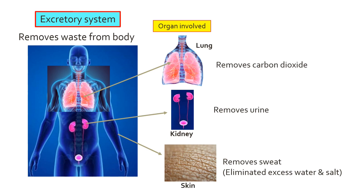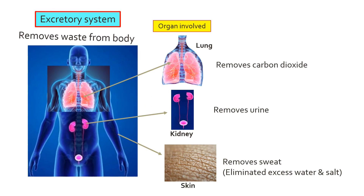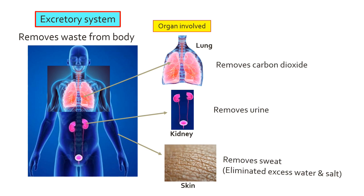Excretory system: function is to remove waste from our body. Organs involved include the lungs, which remove carbon dioxide; the kidneys, which remove urine; and the skin, which removes sweat.